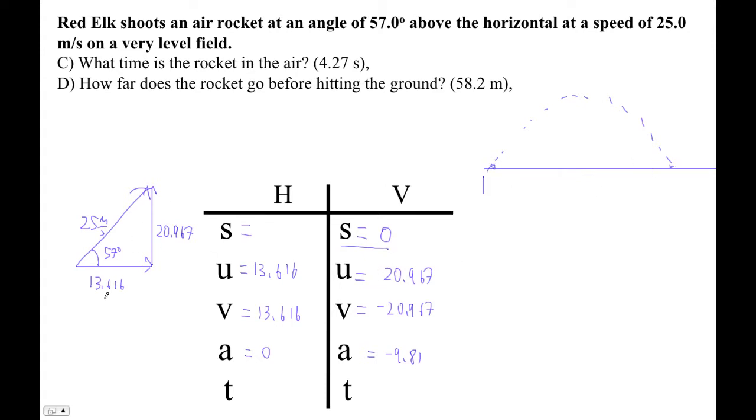These are the components of this vector. This is 25 cos 57. This is 25 sine 57. So those are our components. Notice that we start going up at 20.967, that being this side of this vector. We end up, we hit the ground going down at that speed.